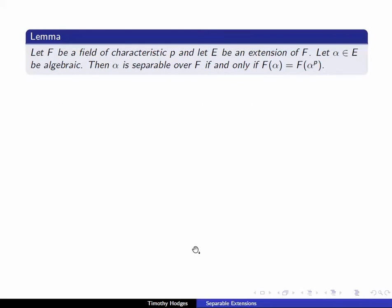Let's prove a little lemma. Since all characteristic zero extensions are separable, we'll restrict our attention to fields of characteristic p. Let F be a field of characteristic p and E an extension of F. An algebraic element alpha in E is separable over F if and only if the field generated by alpha is the same as the field generated by alpha to the p.